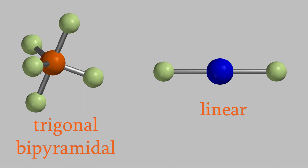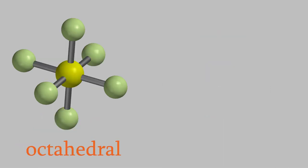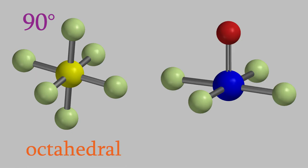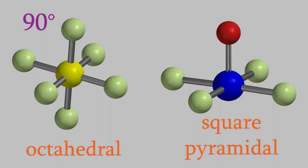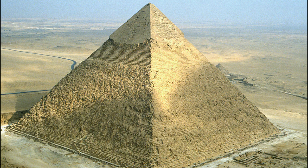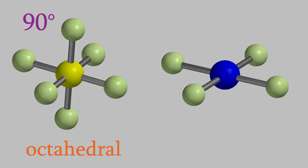The last shape we learned about is the octahedral shape, in which there are six bonds and no electron pairs on the central atom, and all the bond angles are 90 degrees. If you look at xenon oxytetrafluoride, you'll see that this molecule only has five bonds, but there's also an electron pair on the central atom, so the bond angles are still 90 degrees. But since we can't see the electron pair, the shape isn't octahedral — instead, it's called square pyramidal, because it's shaped like a pyramid with a square base. Finally, in the molecule xenon tetrafluoride, there are four bonds and two electron pairs. The electron pairs are on opposite sides of the molecule, so the four bonds make a kind of plus-sign shape, and we say that this is a square planar molecule.